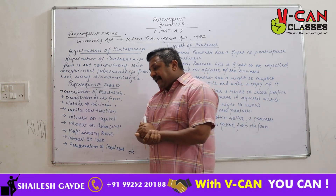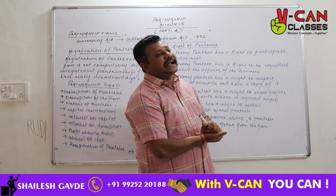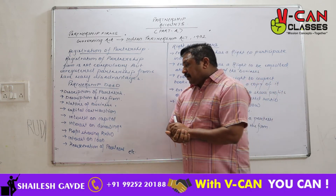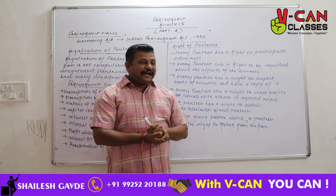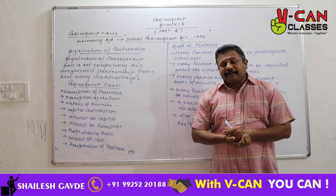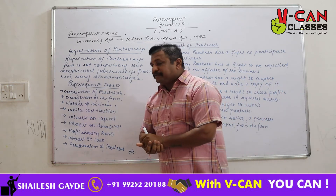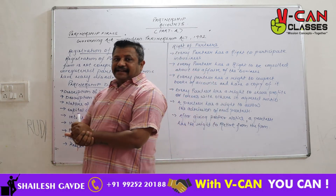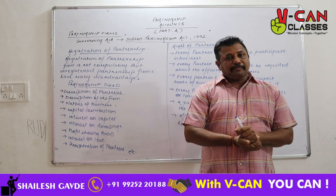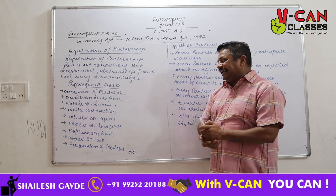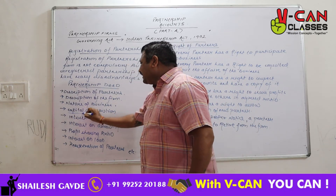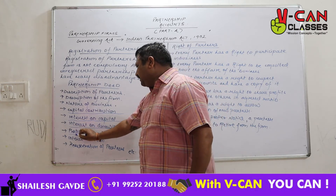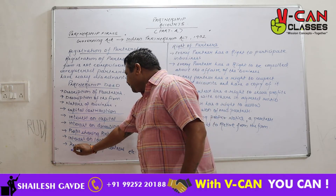If a partner has given any loan to the firm, then how much interest the firm will give to that partner is also specified. These points are very important in a partnership deed: capital contribution, interest on capital, interest on drawings, profit sharing ratio, interest on loan, and remuneration or salary to the partners.